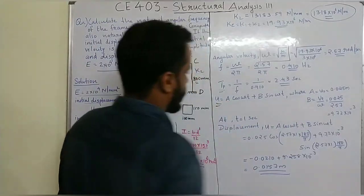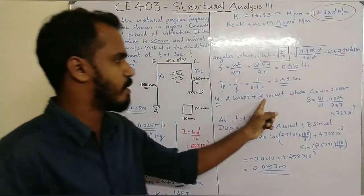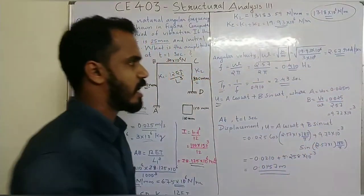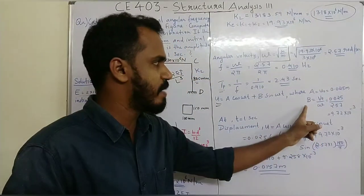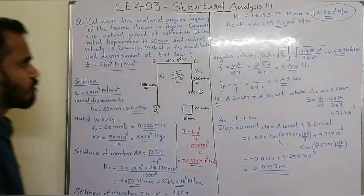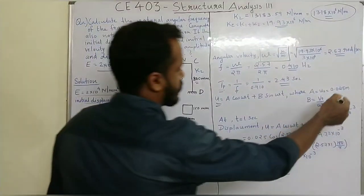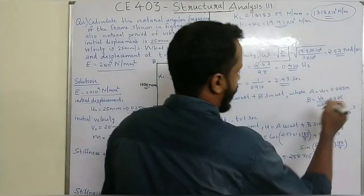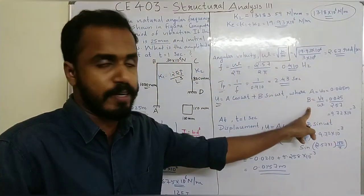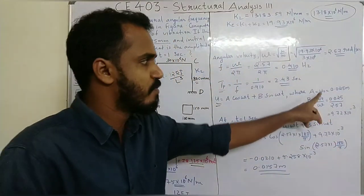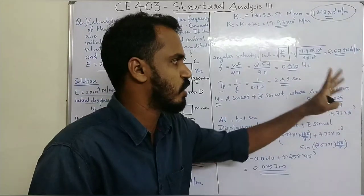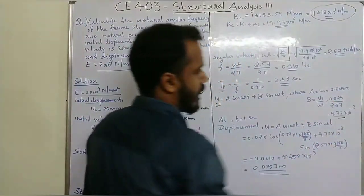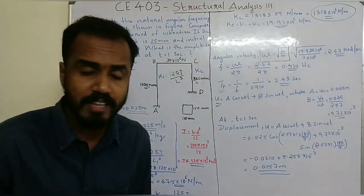Displacement u is equal to A cos(ωt) plus B sin(ωt), where A is equal to u₀ and B is equal to v₀ by omega. If u₀ is equal to 0.025m and v₀ is equal to 0.025, omega is equal to 2.57, so B simplifies to 9.72 into 10 raised to minus 3.